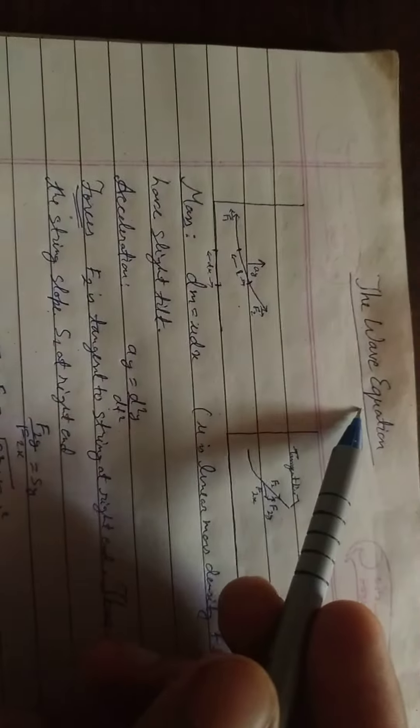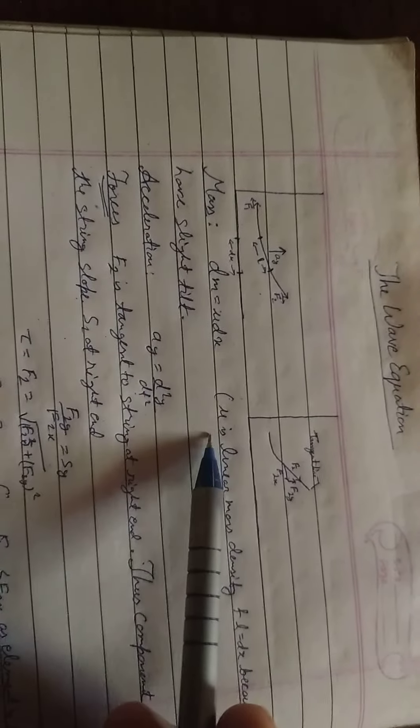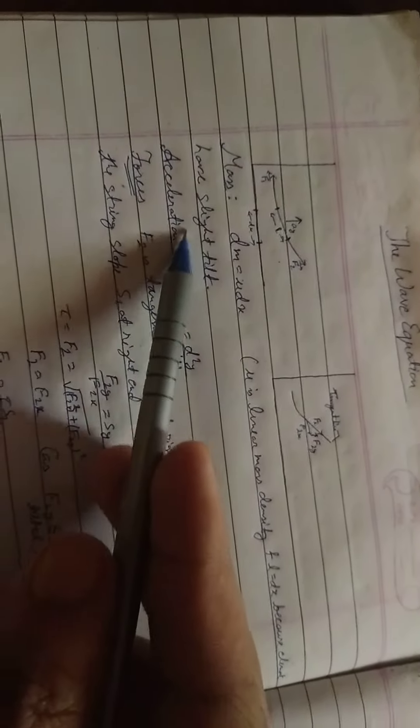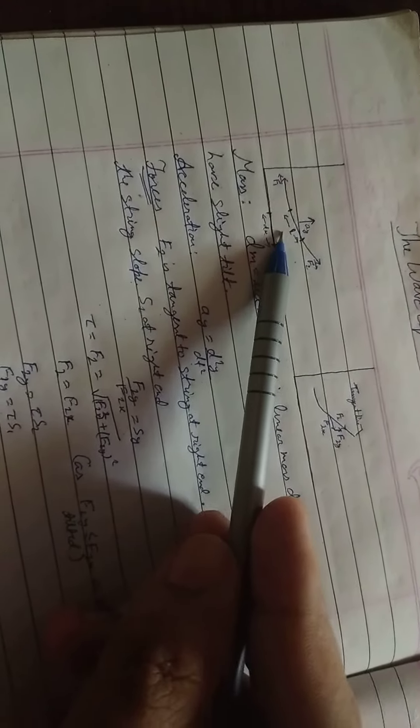Hi friends, today's topic is the wave equation. Mass dm is equal to mu dx, where mu is equal to linear mass density and L equal to dx because the element has a slight tilt. This is the element L having slight tilt and measured across the x-axis as dx.